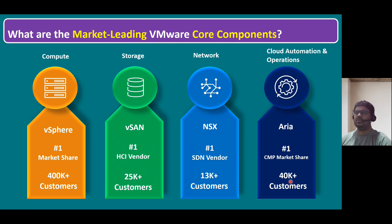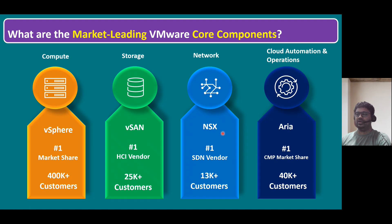Now, customers don't always need all products at once. If a customer is looking for software-defined storage or a hyper-converged infrastructure scenario, we can propose vSphere plus vSAN. If a customer wants overlay networking or software-defined networking, we recommend NSX. And if a customer wants to monitor the complete infrastructure, they can use Aria Operations. If they want automation for the entire environment, they can use the Aria Automation product. Each product has its own separate use-case scenarios.